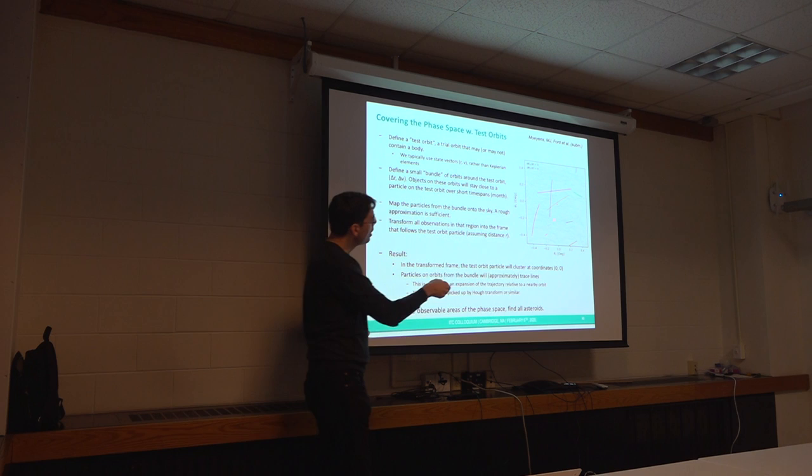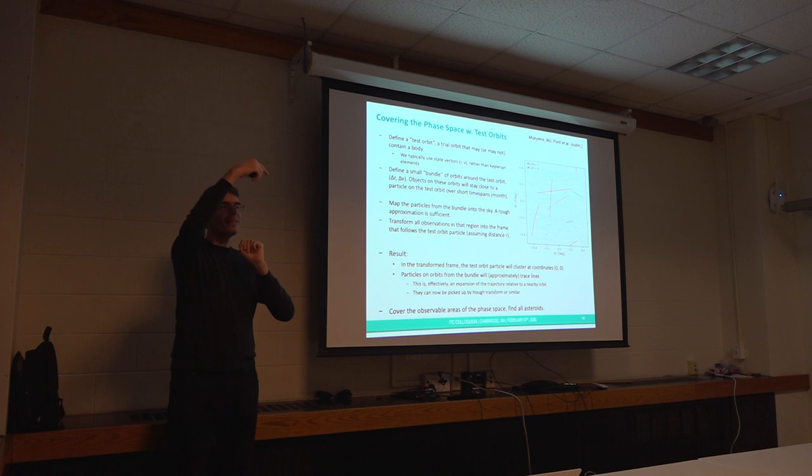Once I've chosen orbit, there's this transformation. Now everything that's in a neighborhood around the chosen orbit, I can actually pick out if I can pick out lines. And we have pretty good algorithms for picking out lines from data sets.